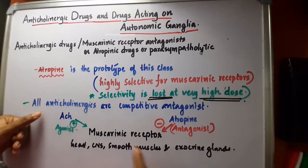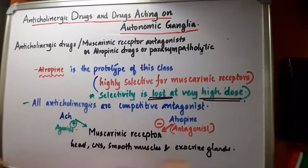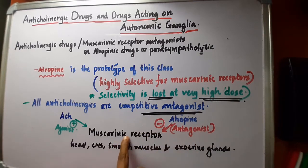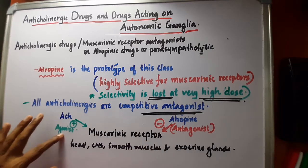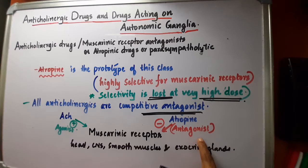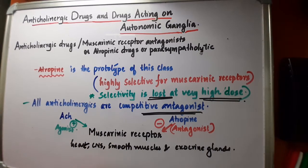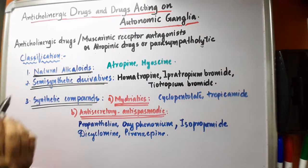Anticholinergics are competitive antagonists — they compete with acetylcholine for the muscarinic receptor site. Acetylcholine is the agonist and atropine is the antagonist. Atropine blocks the muscarinic receptor-mediated action of acetylcholine on the heart, CNS, smooth muscles, and exocrine glands.